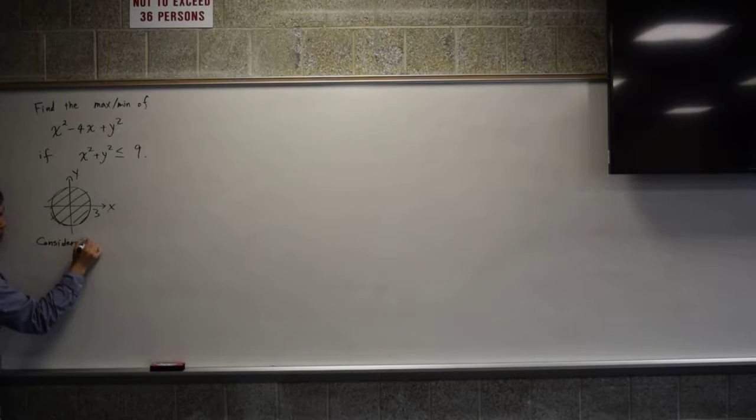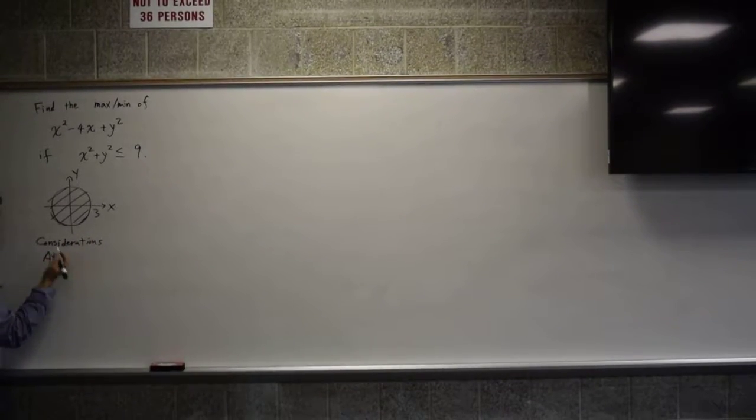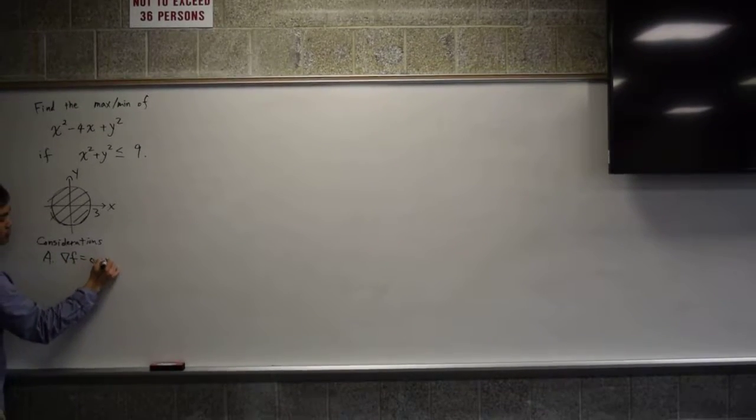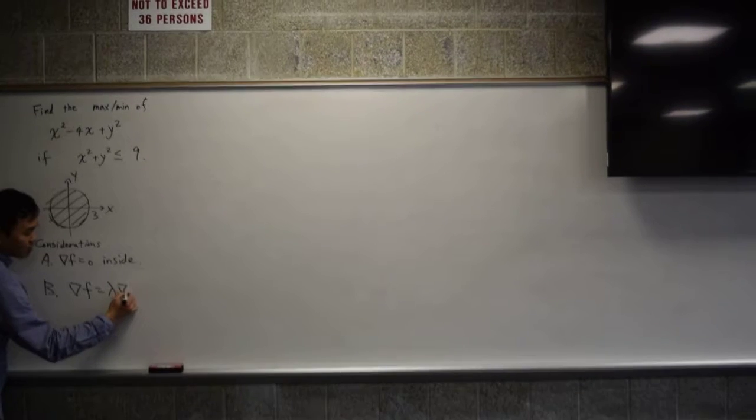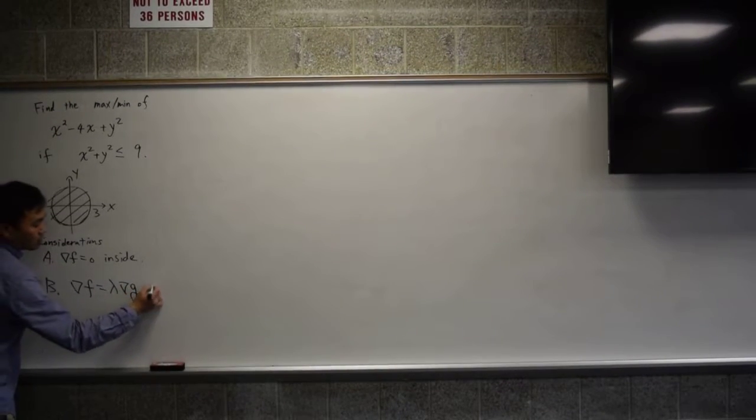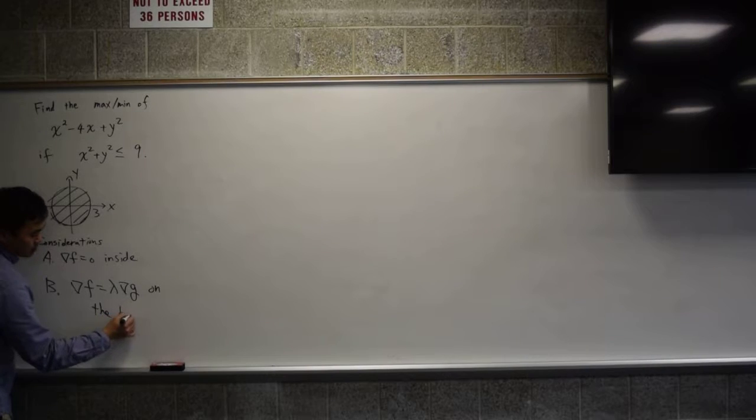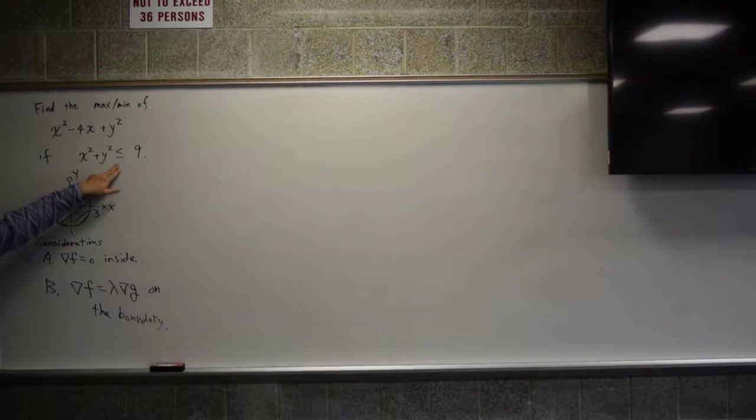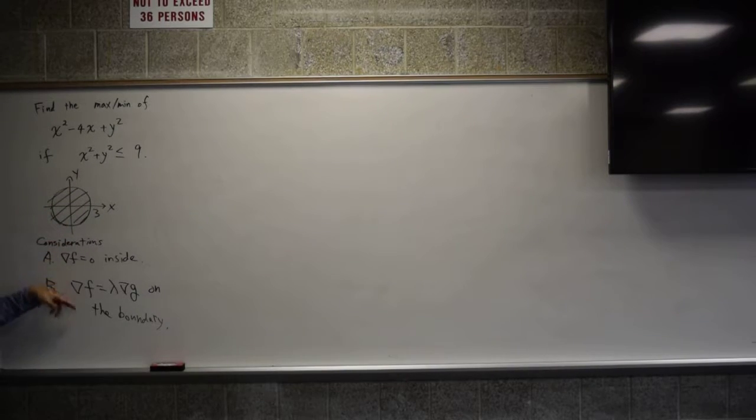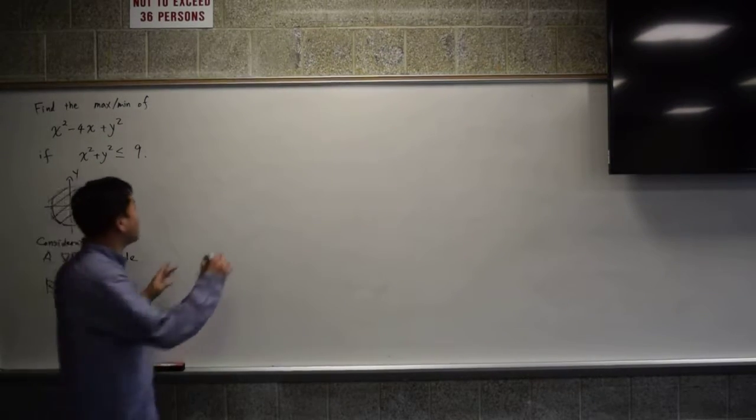Considerations: A, gradient of f equal to zero inside. So inside this domain, you're looking for the critical points. B, gradient of f is equal to lambda times gradient of g on the boundary. So that's what you have to do in order to solve these type of questions, where instead of equality, you have inequality. Let's try to solve it.